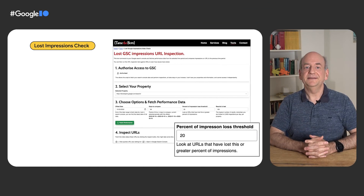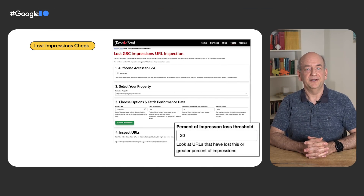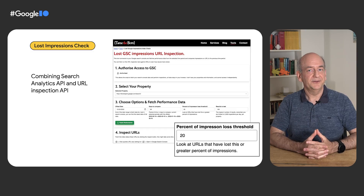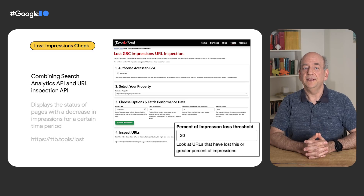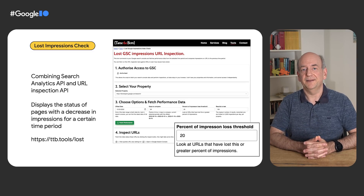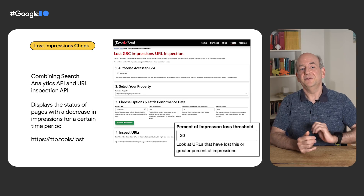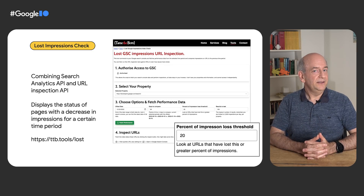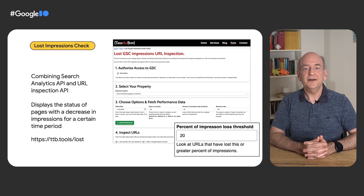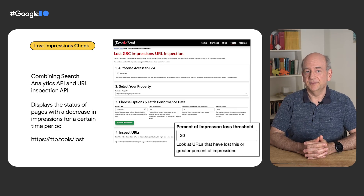Another neat implementation is the Lost Google Impressions Index Check from Dave Smart. This tool combines the Search Analytics tool with the URL Inspection API. In short, it looks for pages that have seen a drop in impressions in Search Console and then checks those with the URL Inspection API to display their status. This is a neat way to combine the two APIs. If you're building a website, you could combine the APIs in a similar way to automatically inform the operator of potential trouble before it becomes a lasting problem.